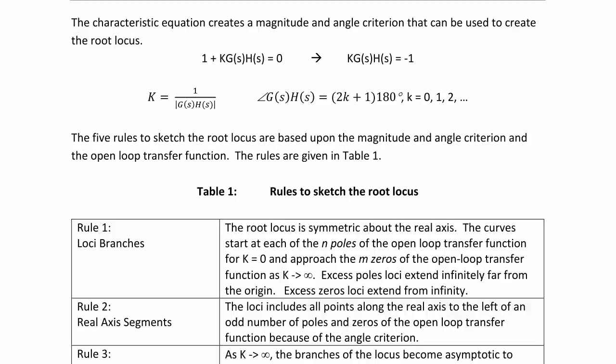Rule 1, Loci Branches: The root locus is symmetric about the real axis. The curves start at each of the n poles of the open-loop transfer function for k = 0 and approach the m zeros of the open-loop transfer function as k approaches infinity. Excess poles' loci extend infinitely far from the origin. Excess zeros' loci extend from infinity.